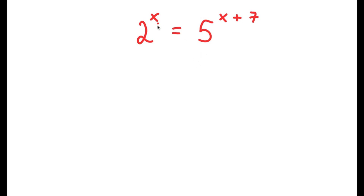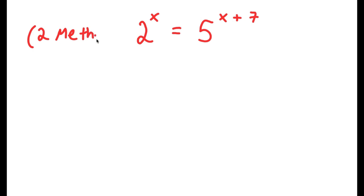Alright, so in this problem I have 2 to the power of x is equal to 5 to the power of x plus 7. I actually have two methods to solve this problem, so make sure to stick around for the video to see me solve both methods.